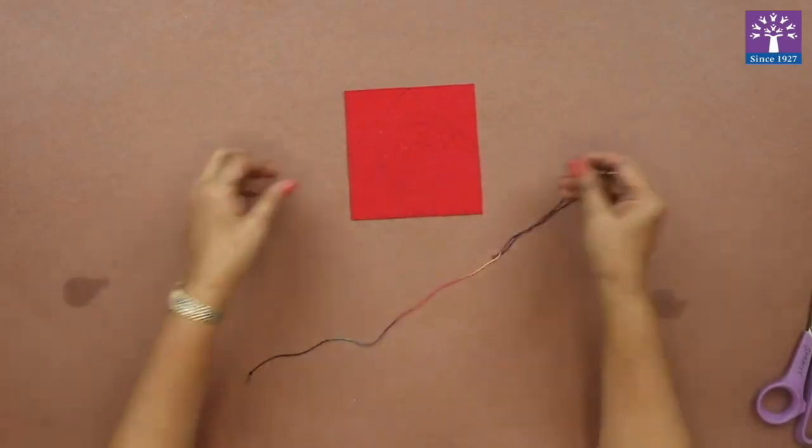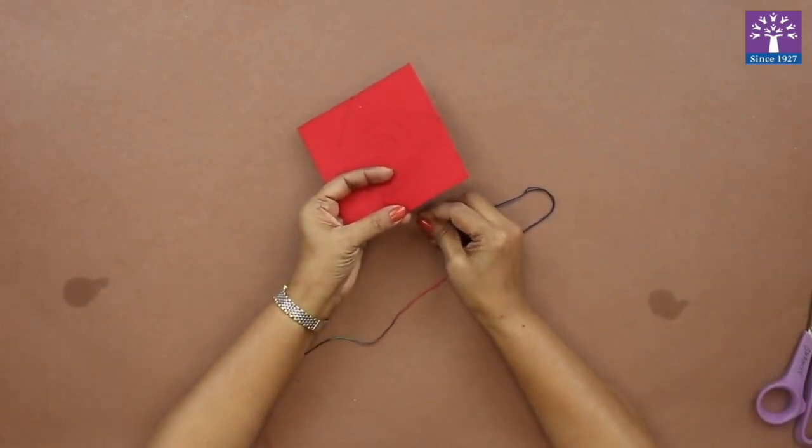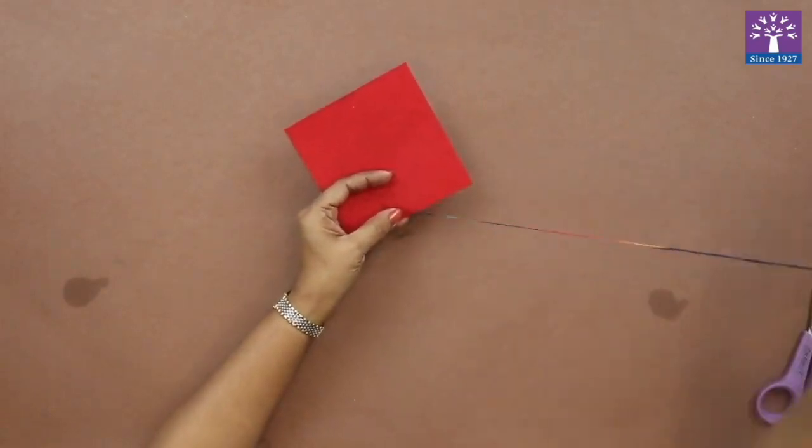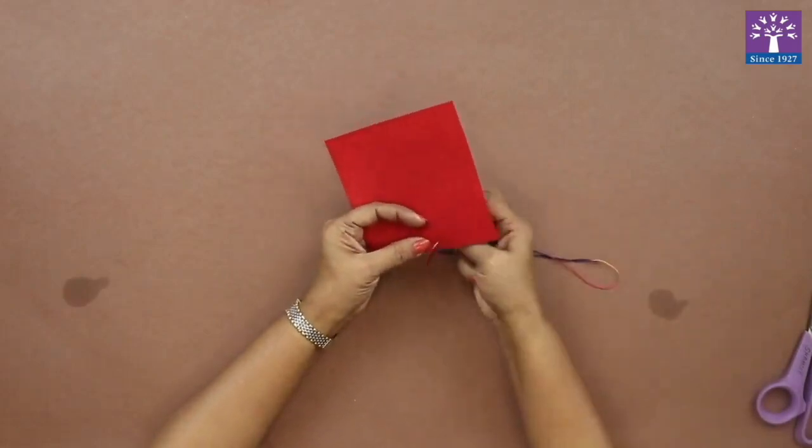Now with the colorful thread we will start the running stitch. You remember the running stitch. One up, one down.